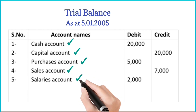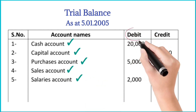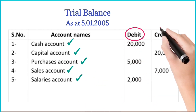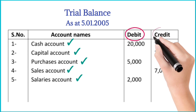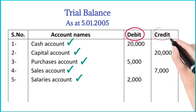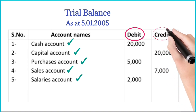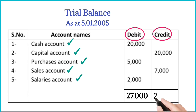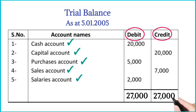Debit balances are recorded in the debit column of a trial balance, and credit balances are recorded in the credit column of a trial balance. Finally, both the debit and credit columns should be equal.